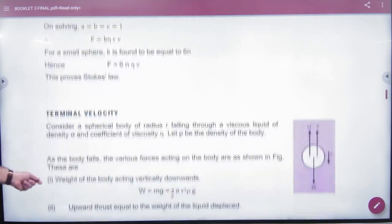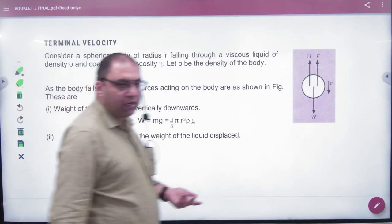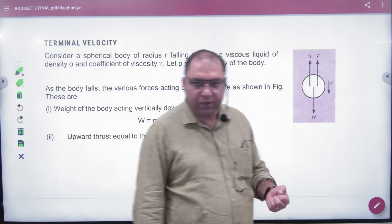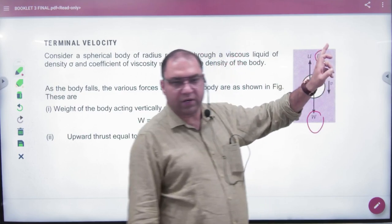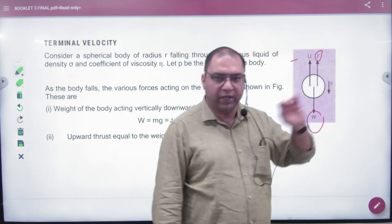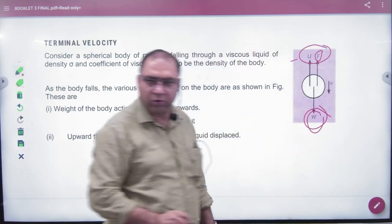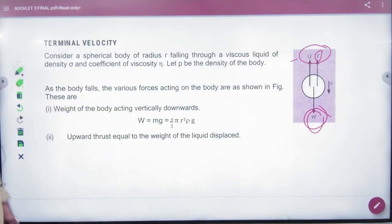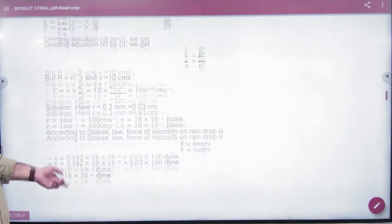After this, we covered terminal velocity. If you have any body falling down, it falls due to its weight. There's viscous force F = 6πηRv, and thrust acting upward. A time will come when the sum of these forces equals the weight. In this case, we get terminal or constant velocity.